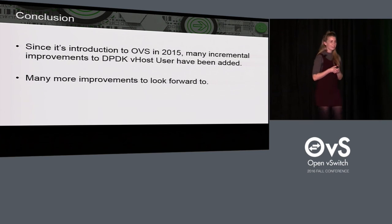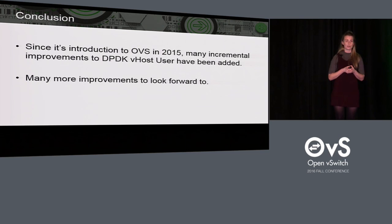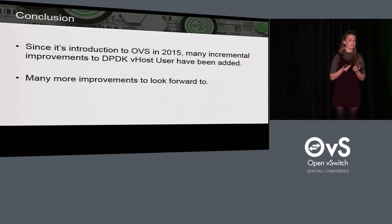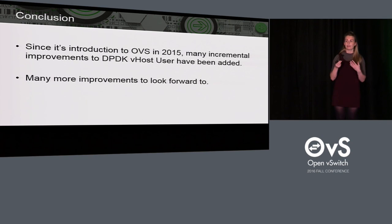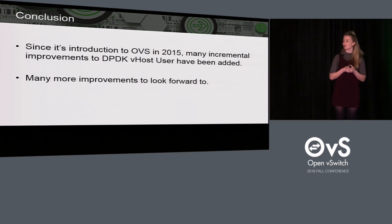That's it. My concluding message is that since vhost user was introduced into OVS in version 2.4 about a year and a half ago, it has come a long way thanks to the great work being done by the DPDK community and all the new features they're integrating. We're certainly reaping the benefits in Open vSwitch, and it looks like we'll continue to do so well into the future. Thanks very much — I'd happily answer any questions.